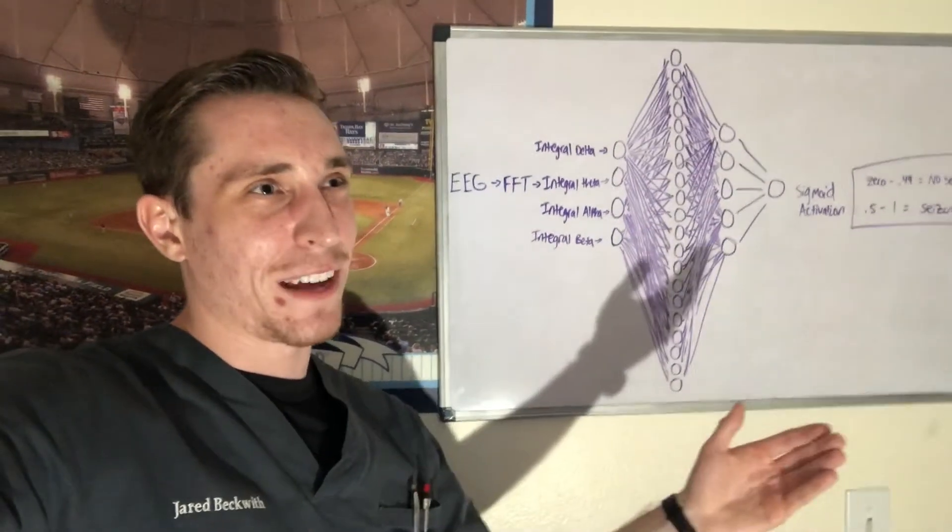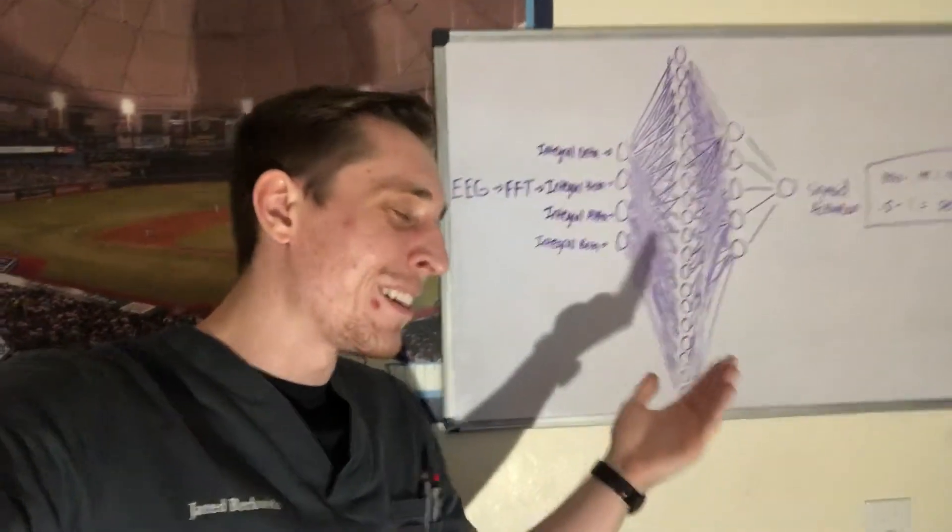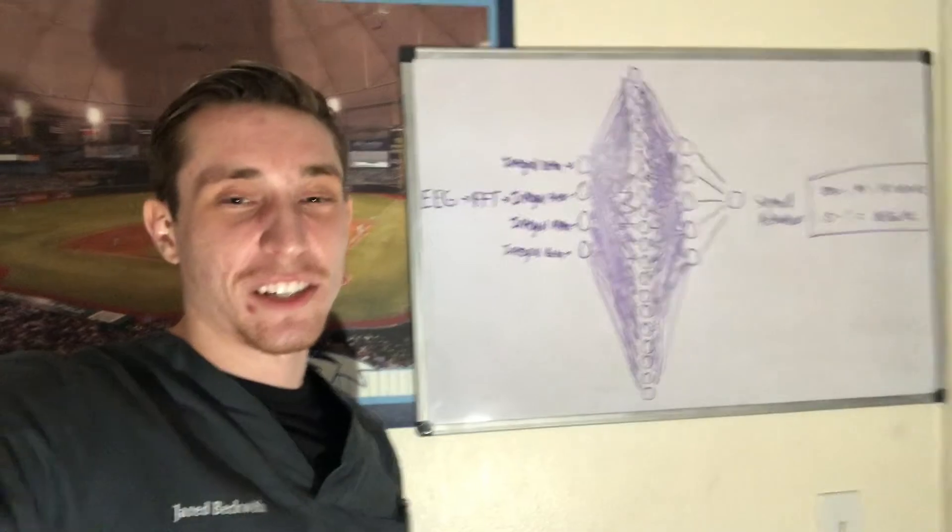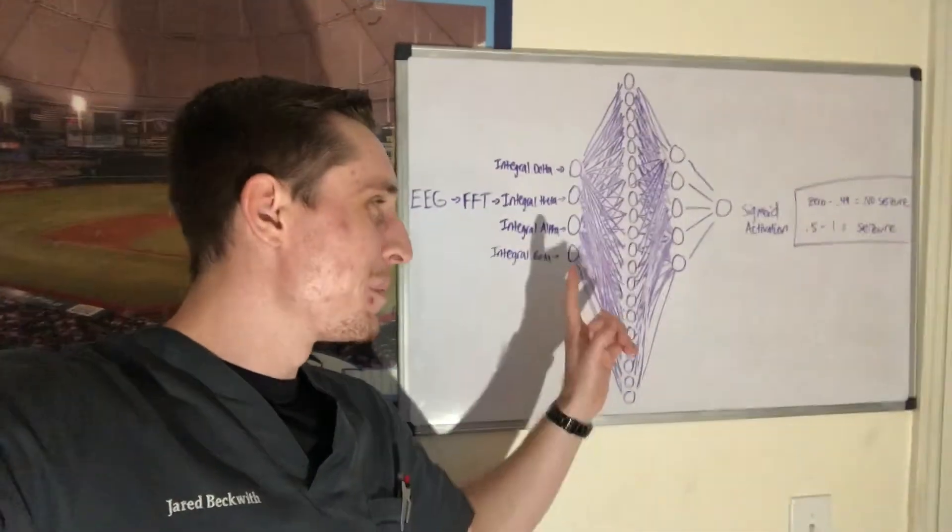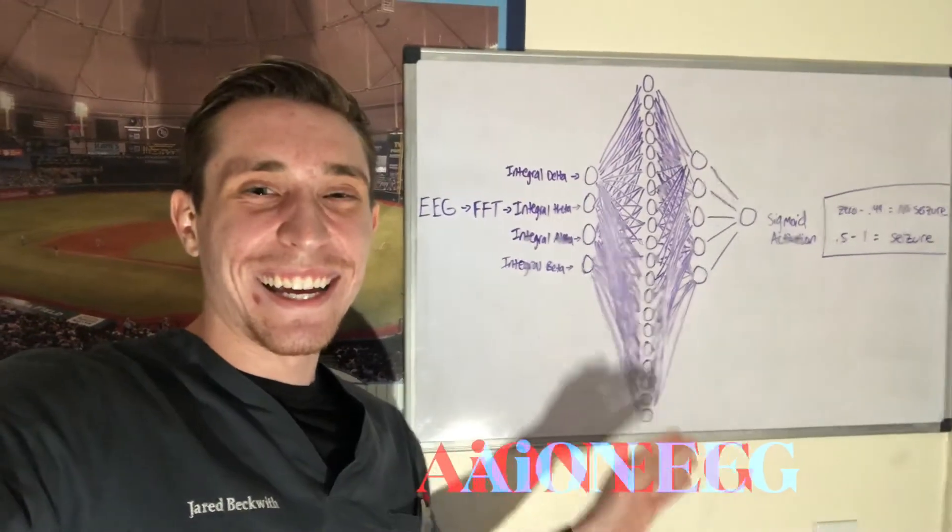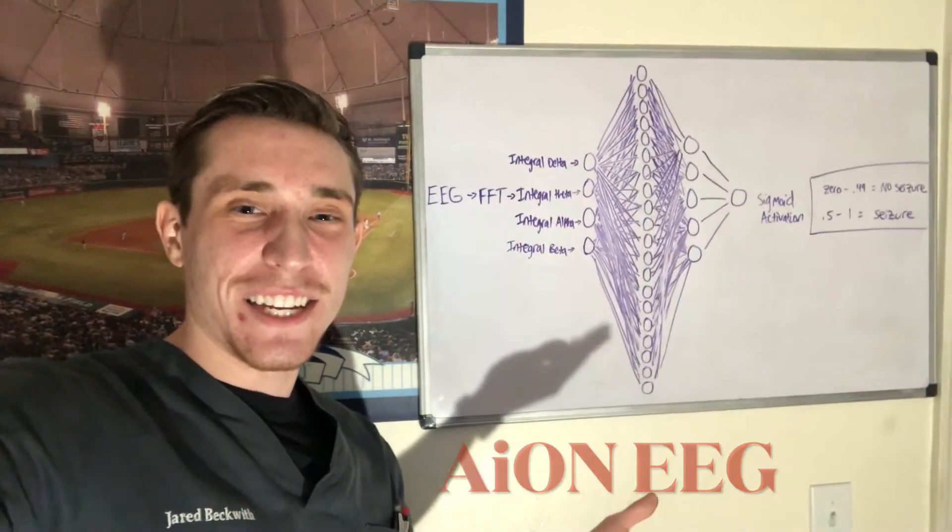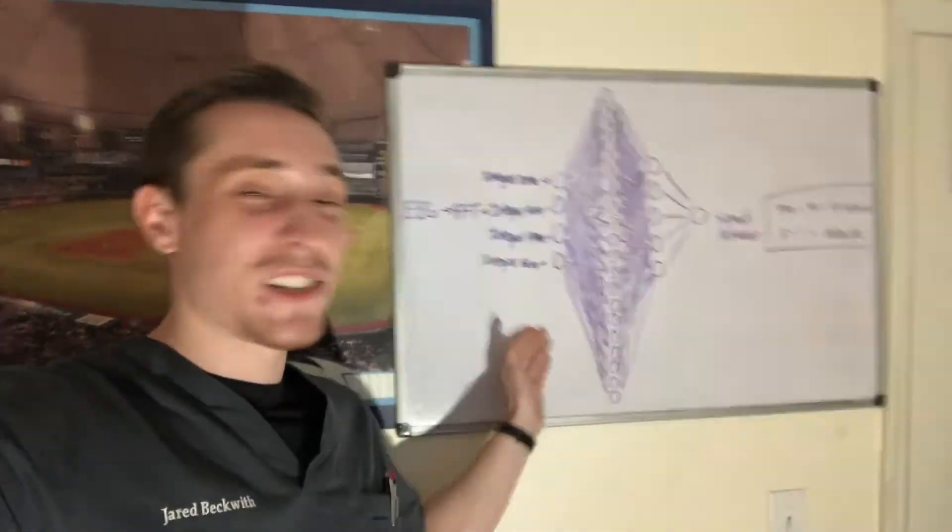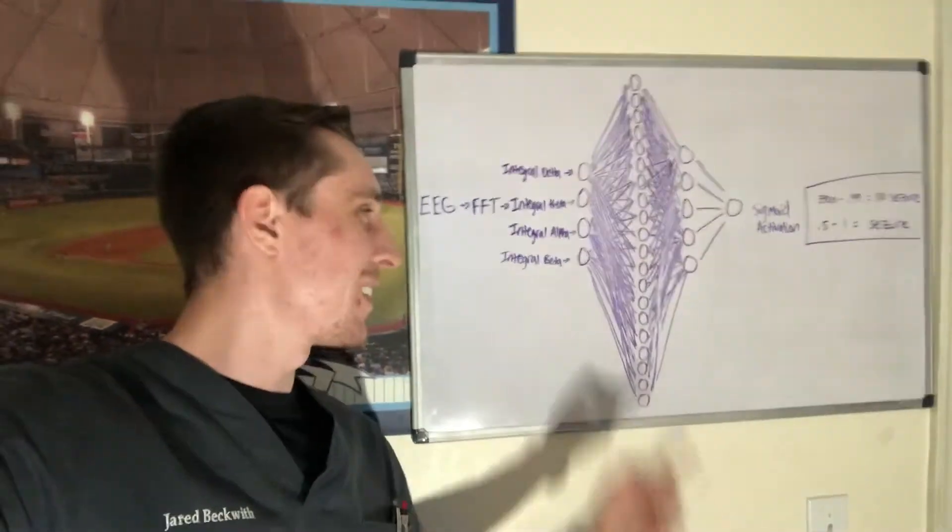That's key because I always see seizure detectors mark artifact as seizure and it's like no no stupid computer. So hopefully this is the beginning of me teaching a computer how to read an EEG. I'm going to be the master of AI on EEG and that's why I started my company Ion EEG. If you're interested in using my software my seizure detector in the future, not out yet don't worry guys it will be in the future, this is the fundamentals of it right here.